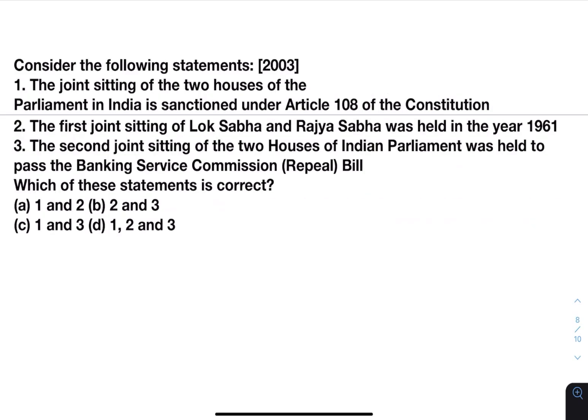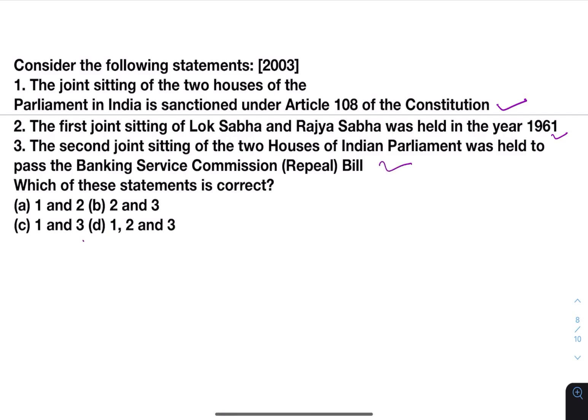Consider the following statements. The joint sitting of the two houses of parliament in India is sanctioned under Article 108 of the Constitution — true. The first joint sitting of Lok Sabha and Rajya Sabha was held in the year 1961 — true. The second joint sitting of the two houses of Indian parliament was held to pass the Banking Service Commission Appeal Bill — this is also correct. So the answer will be 1, 2, and 3.